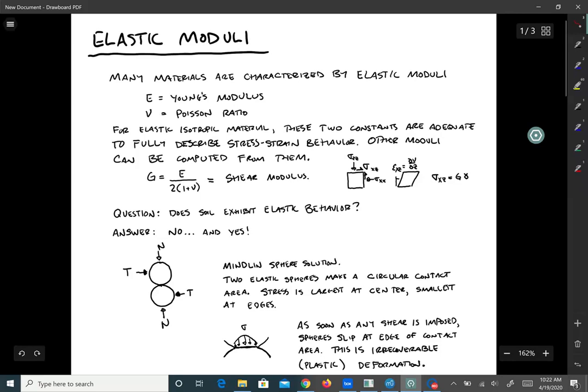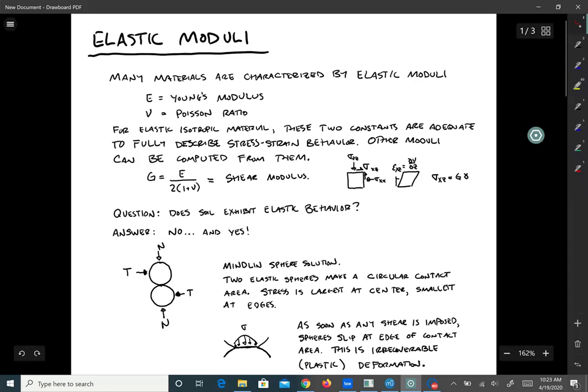Now if we do that simple shear test where we add shear stress on horizontal and vertical planes, the relationship between the shear strain—actually I've got a little mistake in here, I wanted to call this gamma.